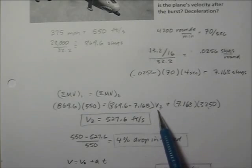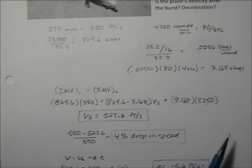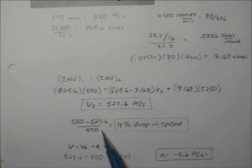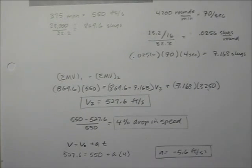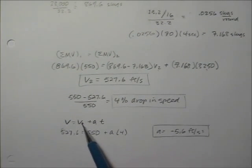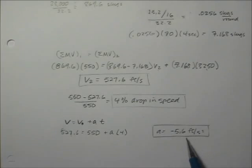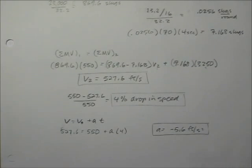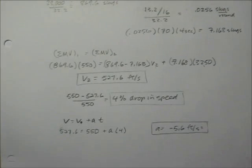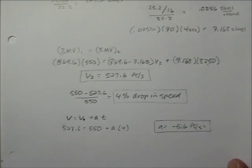Solving for V₂, the velocity of the airplane after firing is 527.6 feet per second. We started at 550, so that's a 4% drop in speed — pretty significant. We can also calculate acceleration: ending velocity equals beginning velocity plus acceleration times time. With time = 4 seconds, beginning velocity 550, and ending velocity 527, the acceleration is negative 5.6 feet per second squared — that's a pretty good braking effect just from firing the gun.